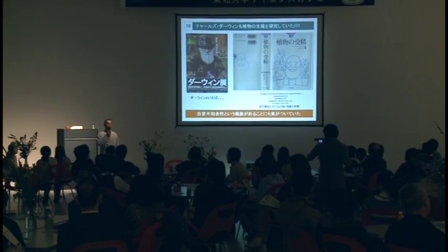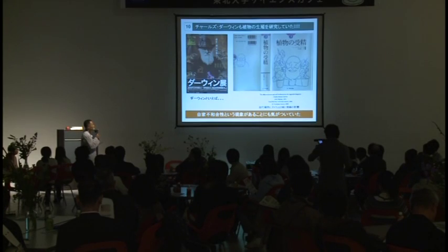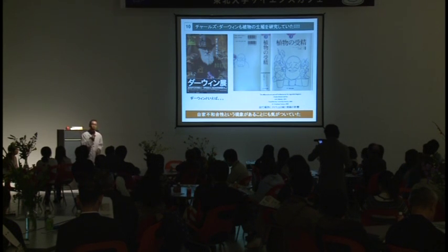なんでじゃあダーウィンがそんなことに興味を持ったのかというと、ダーウィンのお母さんというのは、イギリスの有名なお家柄の、ウェッジウッドという陶器を作っている、ティーカップなんかを作っていますが、そのウェッジウッド家の方がお母さんです。つまり、ウェッジウッドという名字の方とダーウィンという名字の方が結婚して、チャールズ・ダーウィンという名前をもらったわけです。でじゃあ、チャールズ・ダーウィンは誰と結婚したかというと、そのウェッジウッド家のお母さんの兄弟、つまりいとこと結婚したわけですね。